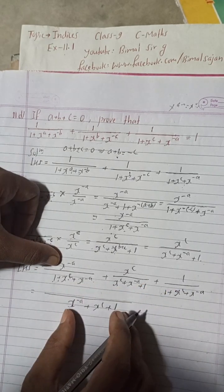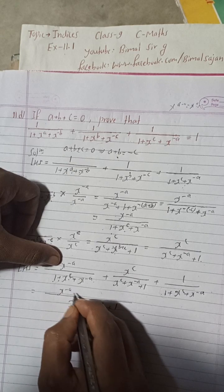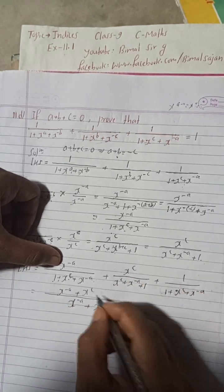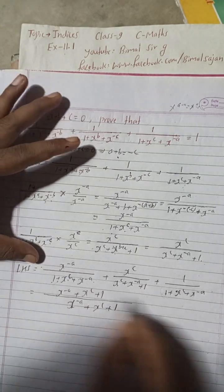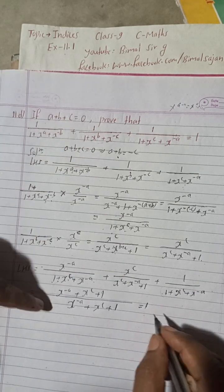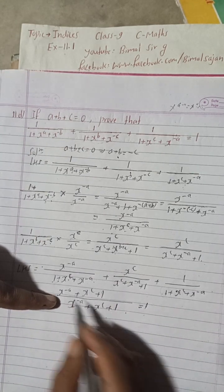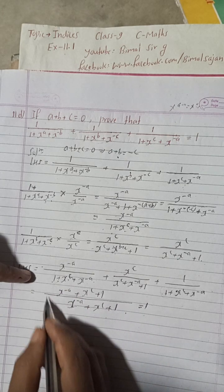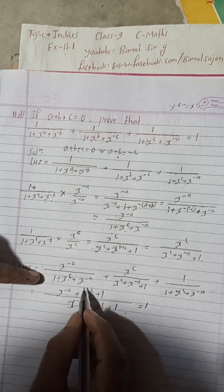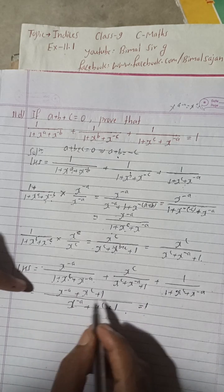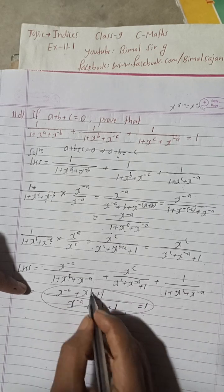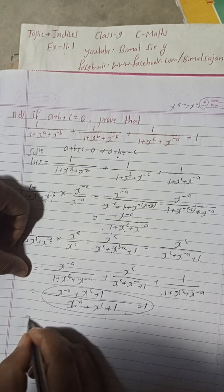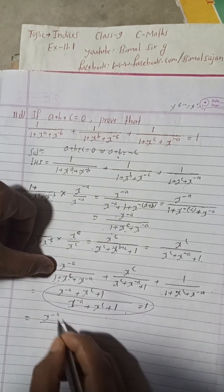We can cancel the numerator and denominator since they are the same — x^(-a) plus x^c plus 1 — and we get 1. If you don't understand, I will arrange it more clearly. The numerator is x^(-a) plus x^c plus 1, and the denominator is also x^(-a) plus x^c plus 1.